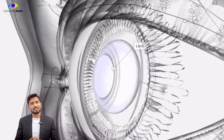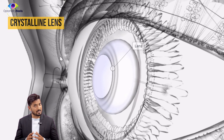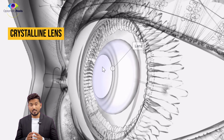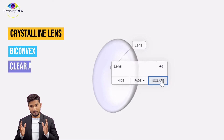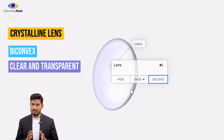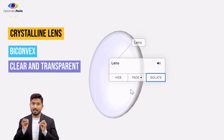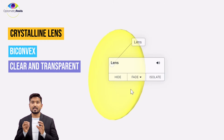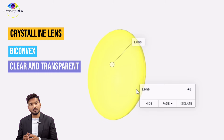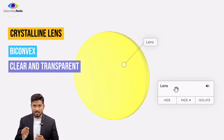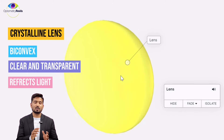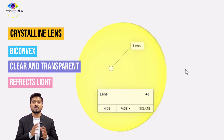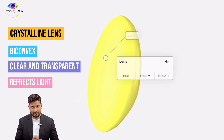The lens of the eye is also known as the crystalline lens, which is a bi-convex structure that is clear and transparent. It also has refractive power which allows it to refract light passing through it, focusing it onto the retina.